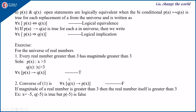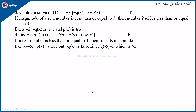The converse is ∀x Q(x) → P(x). This is false because if the magnitude of a real number is greater than 3, it does not mean the real number itself is greater than 3 — consider x = -5. Q(-5) is true but P(-5) is false, since |-5| > 3 but -5 > 3 is false. Therefore the implication is false. The contrapositive is logically equivalent to the original implication, so it is true. The inverse and converse share the same truth value, so the inverse is also false.